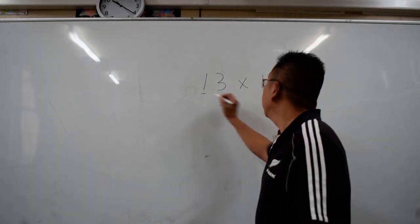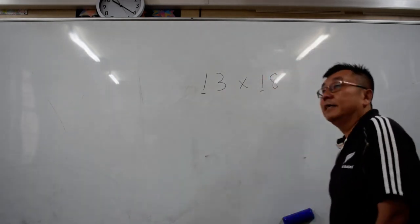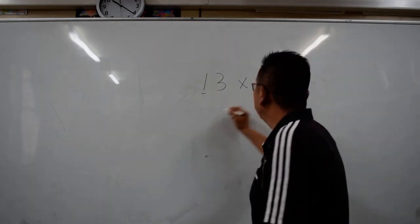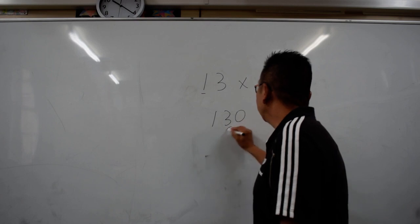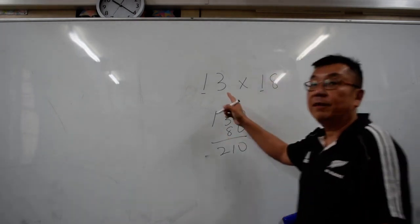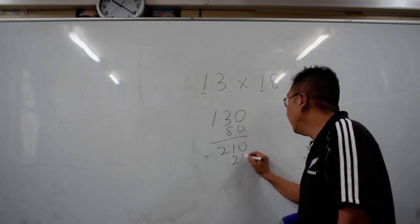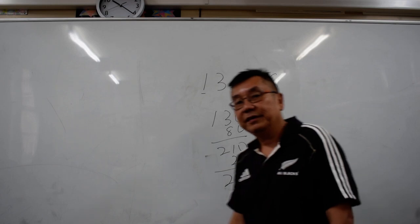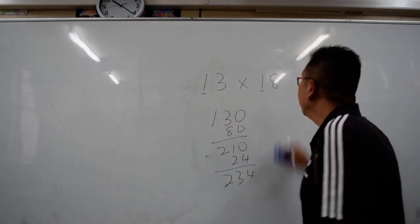So what you do, you just need to put 130 plus 80 plus 80, it will give you 210. And then you multiply 3 by 8 is 24. And add up 234. Now we do another number now.